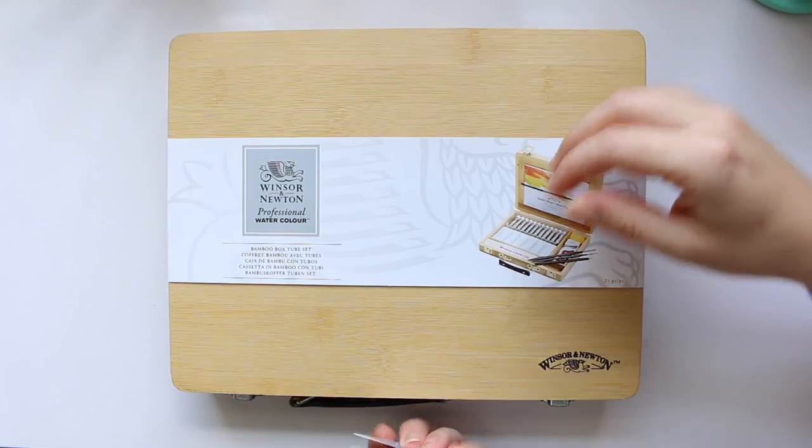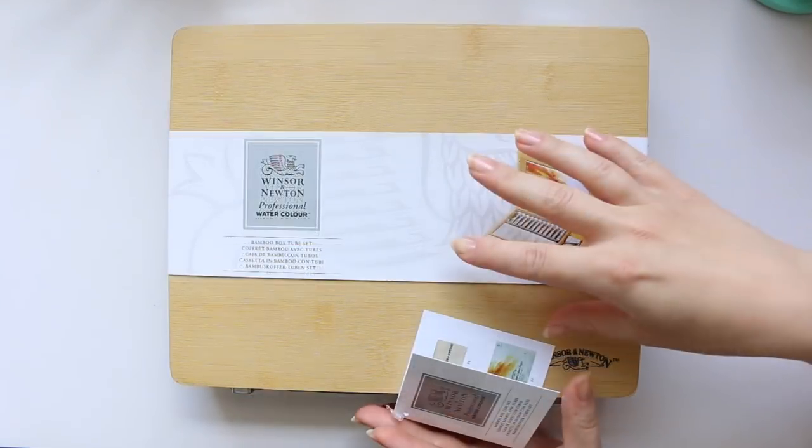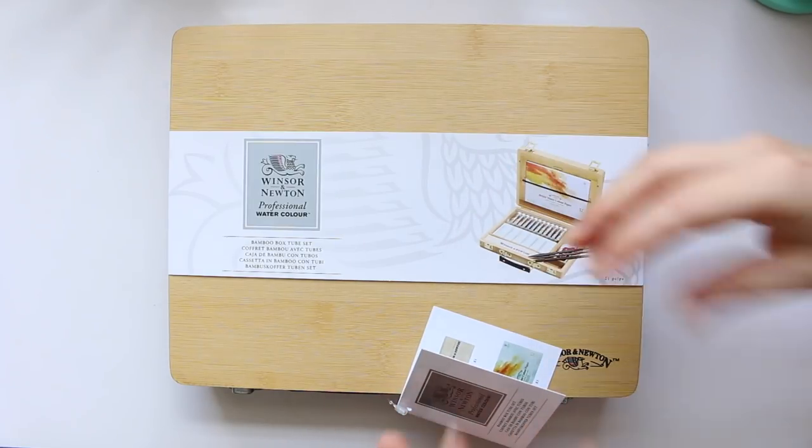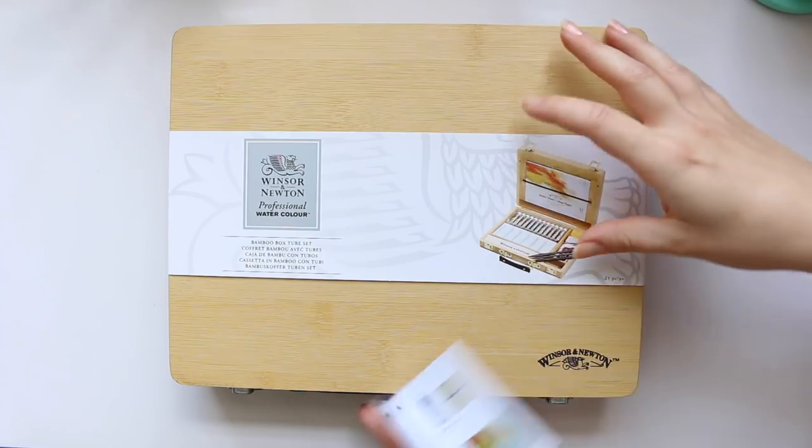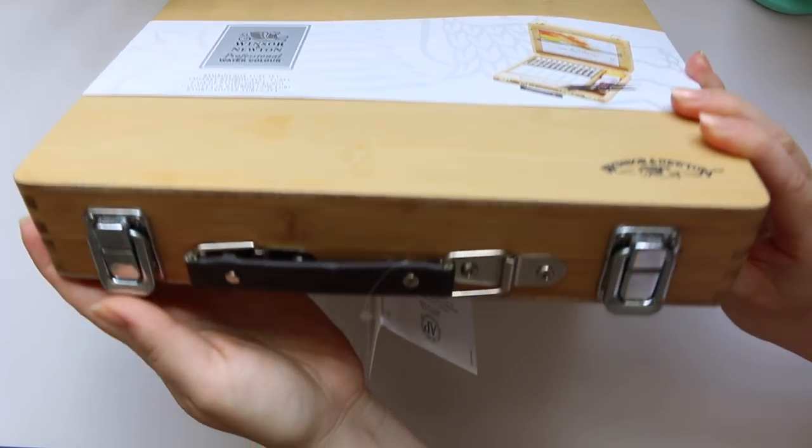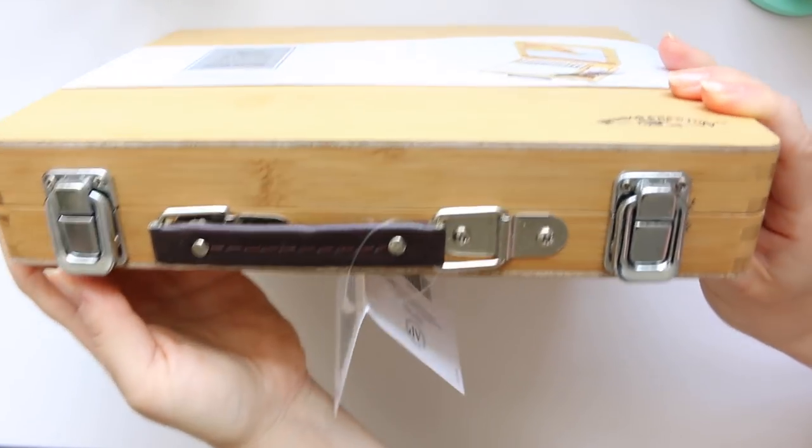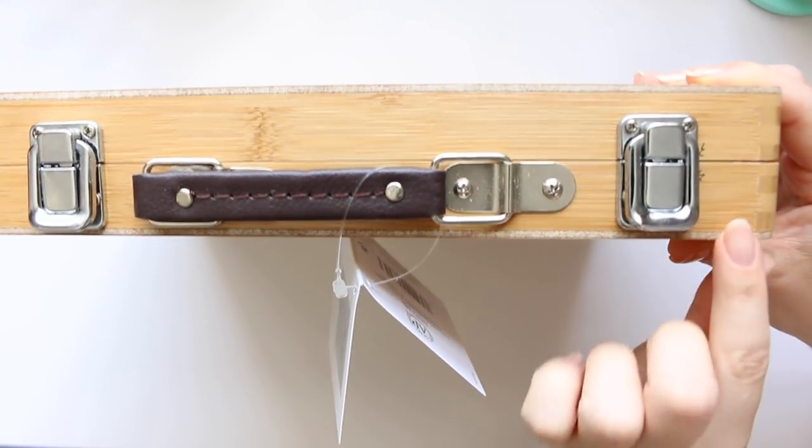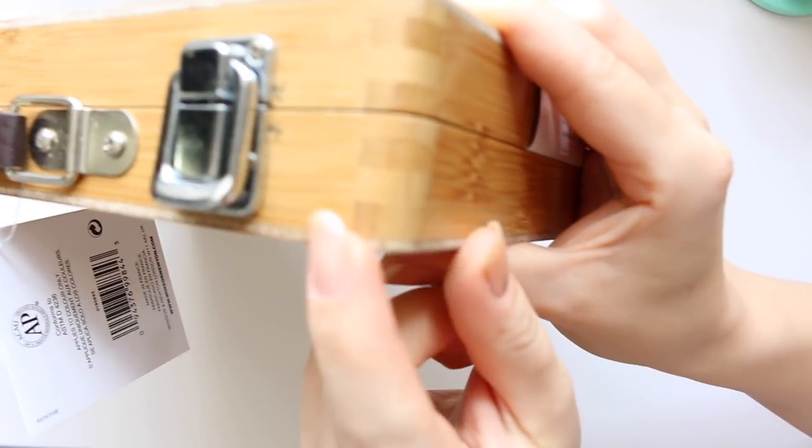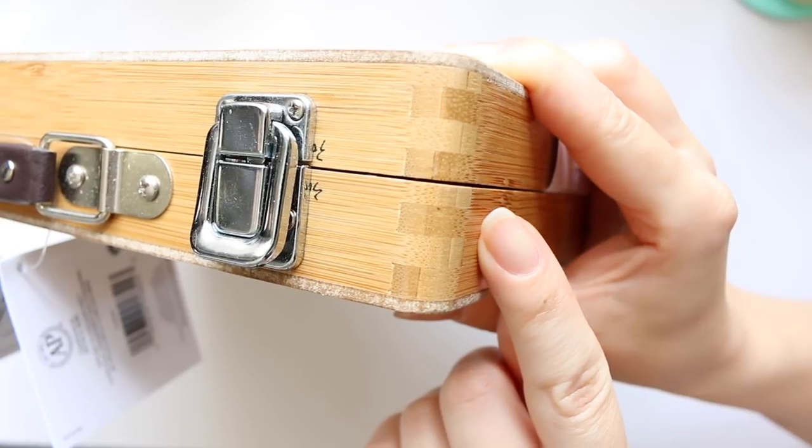I just wanted to show you so you can see what the set looks like in real life. So basically it comes as I said in a bamboo box, but it's not just a box, it's a lovely looking kind of case beautifully done. You can see the sides, the corners right here, so it's very nicely done.